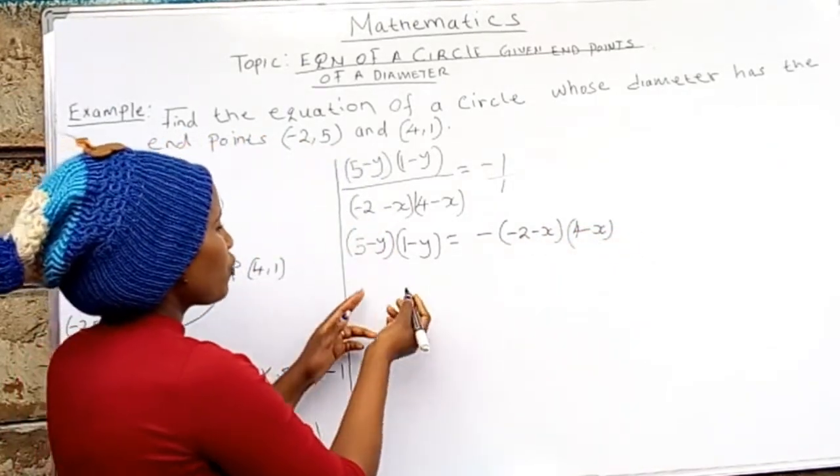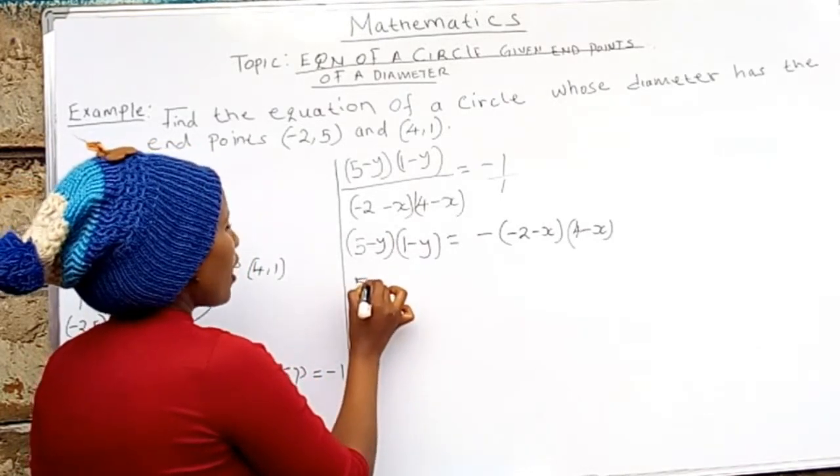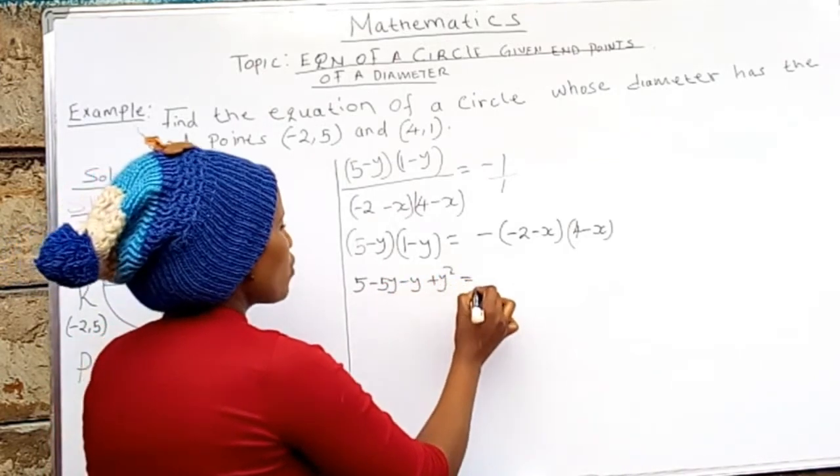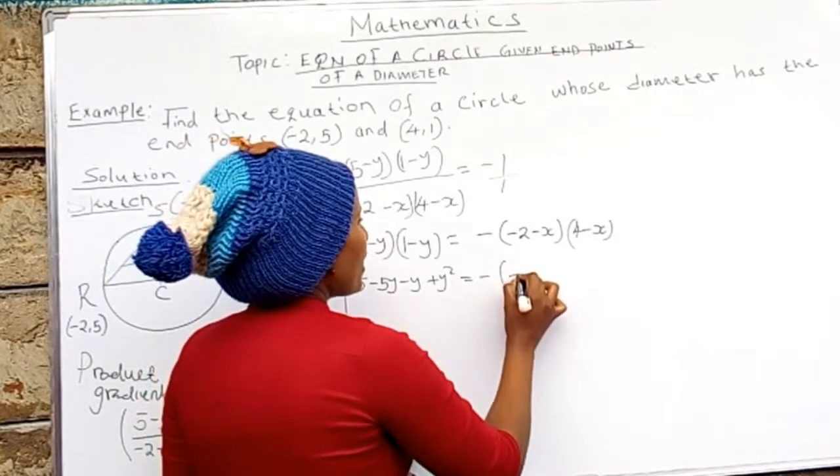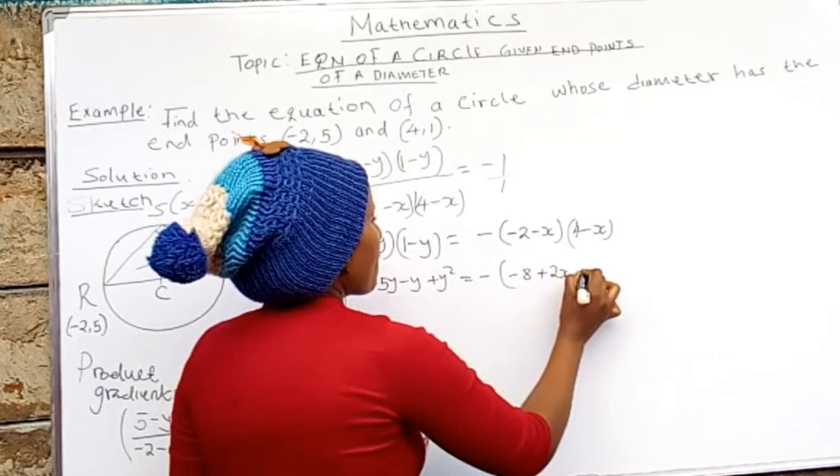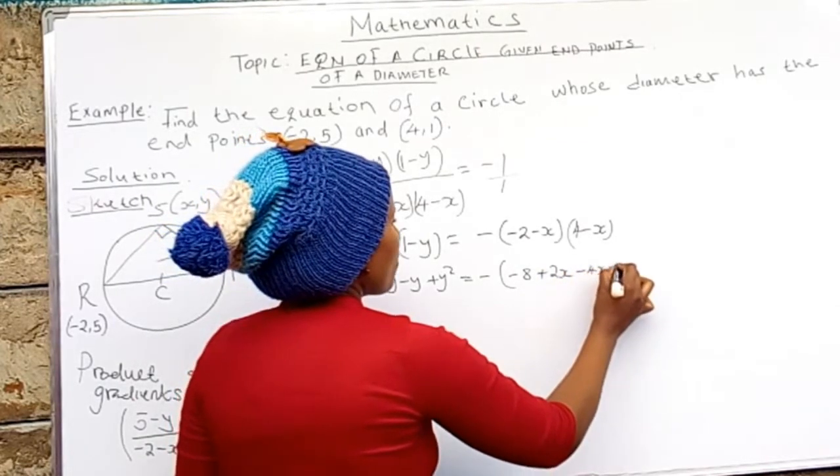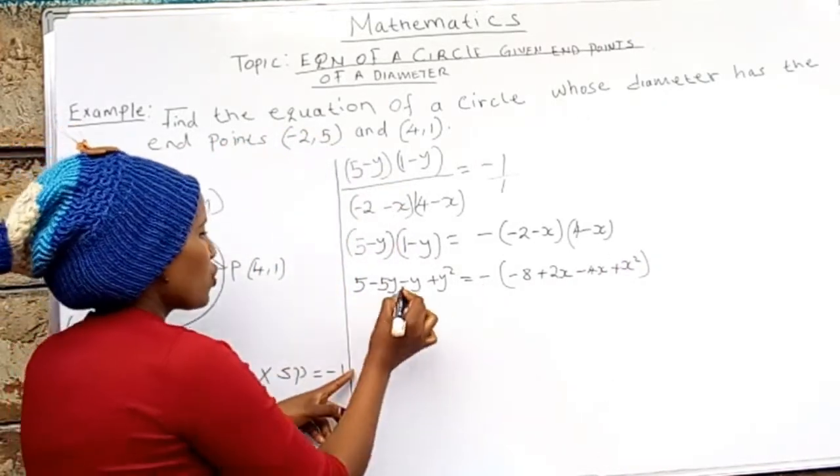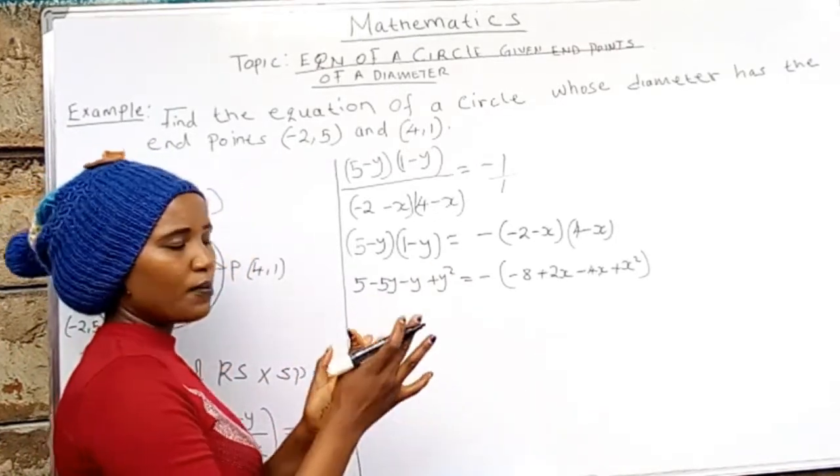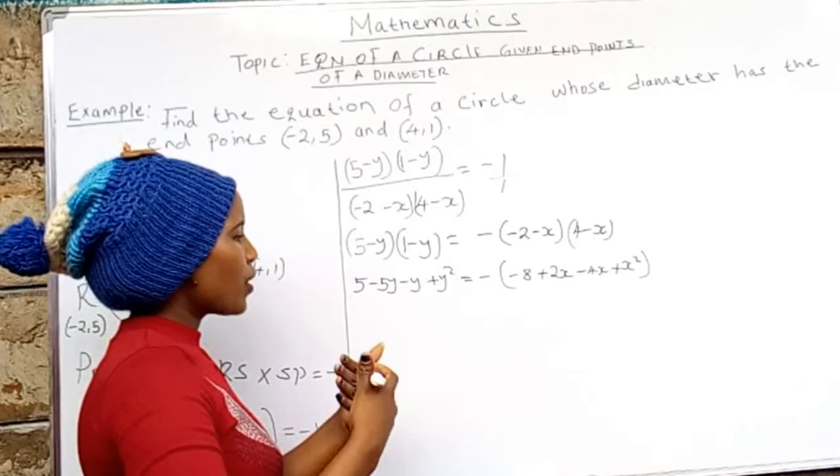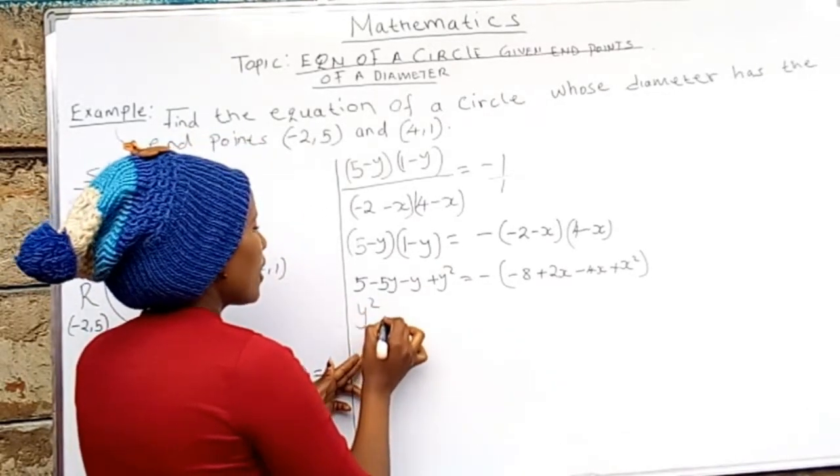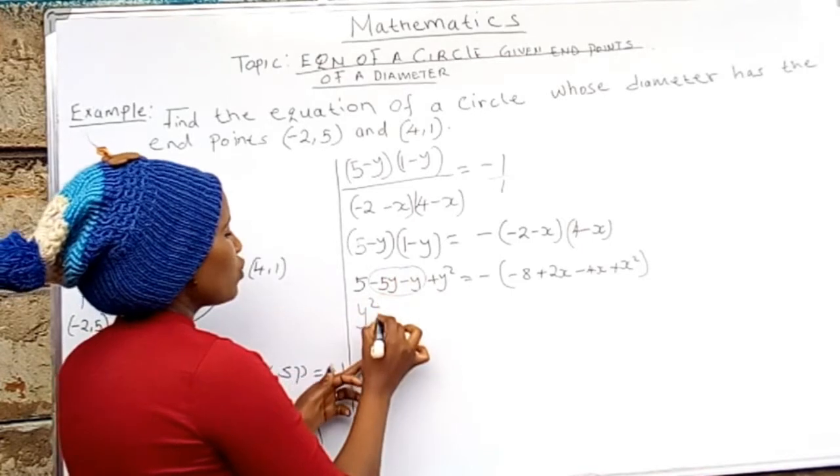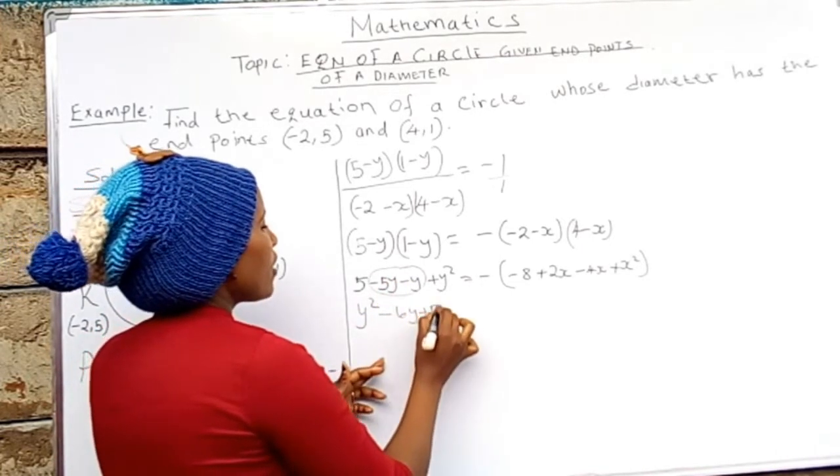So if we do the multiplication here, we shall have 5 - 5y - y + y² equals -8 + 2x - 4x + x². So we have to do away with this negative. If I arrange them so that they appear in a better way of a quadratic equation, we shall have y² minus 5y minus y, which will give me -6y. So we shall have y² - 6y + 5 equals...